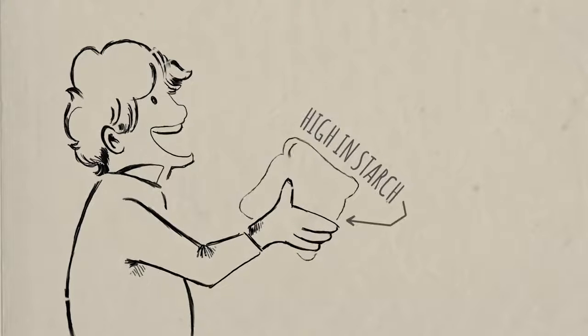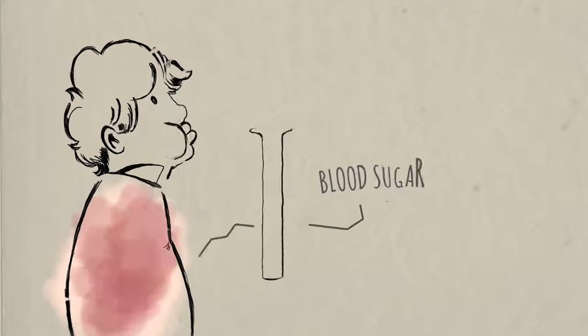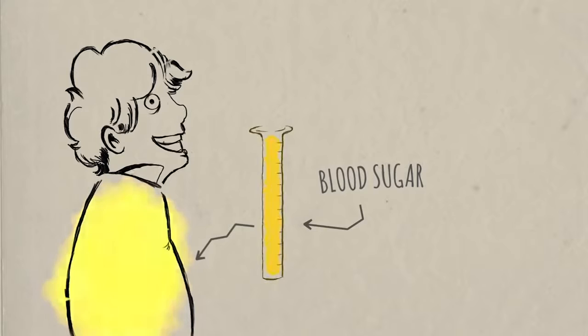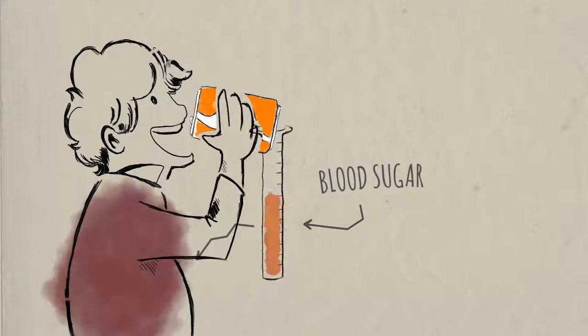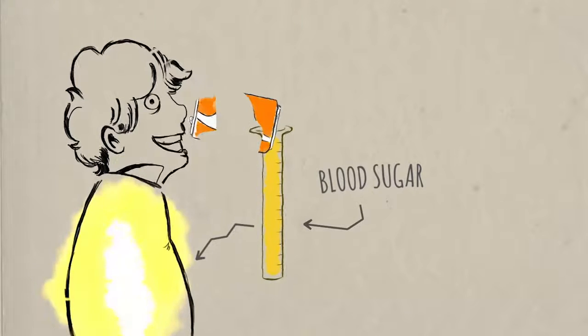So foods high in starch, like crackers and white bread, are digested easily, quickly releasing a whole bunch of glucose into your blood, exactly what would happen if you drank something high in glucose, like soda.